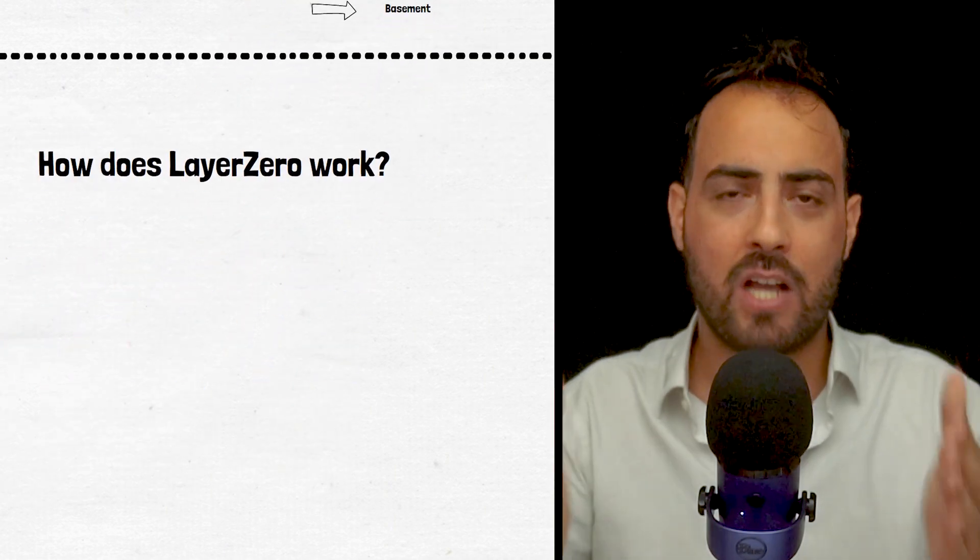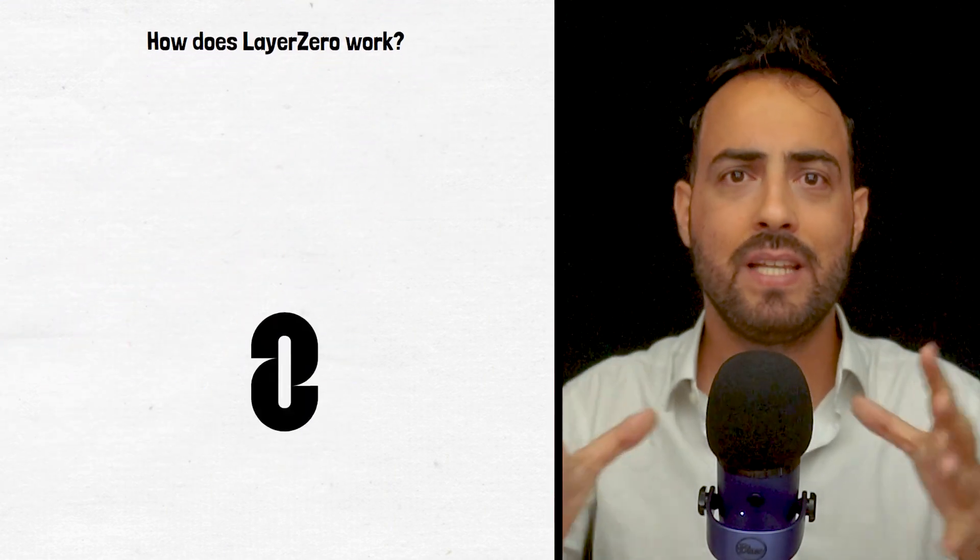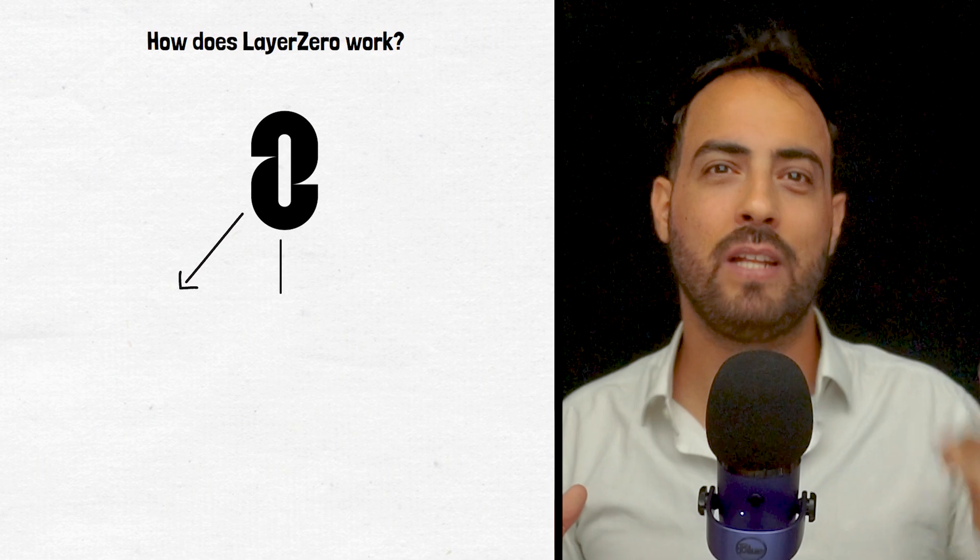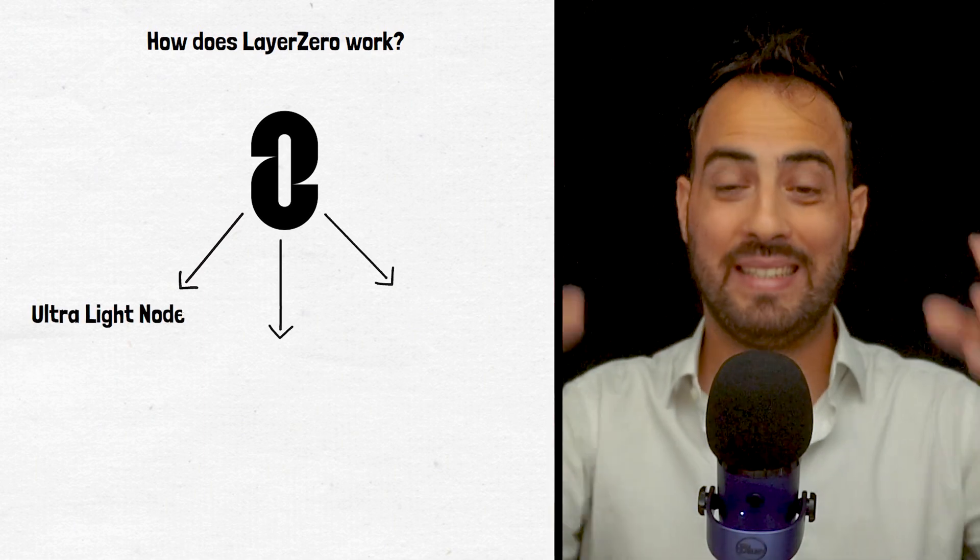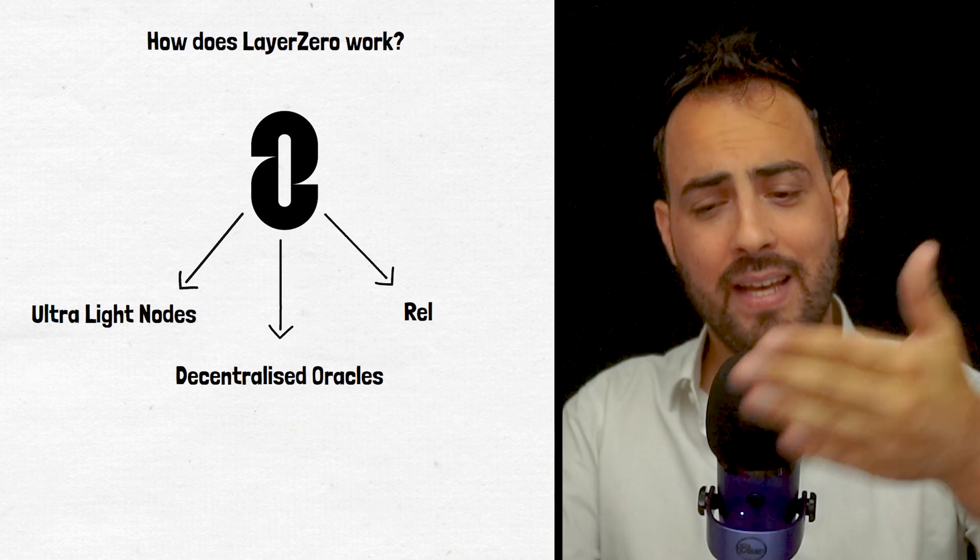But how does this actually work? Layer 0 can be broken down into three components: Ultralight nodes, decentralized oracles, and relayers.